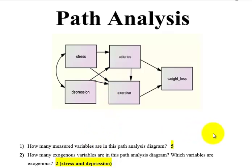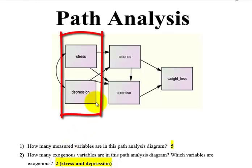Second question: how many exogenous variables? An exogenous variable is a rectangle that only has one-way arrows going out. We only have two here: stress and depression.